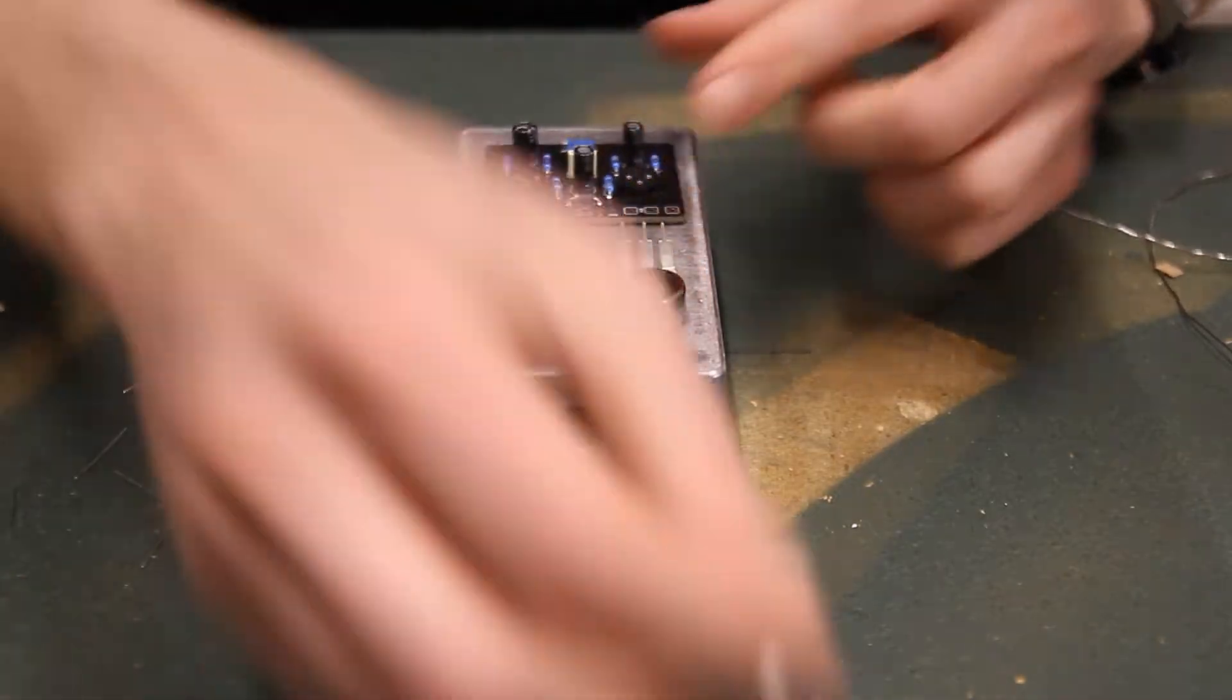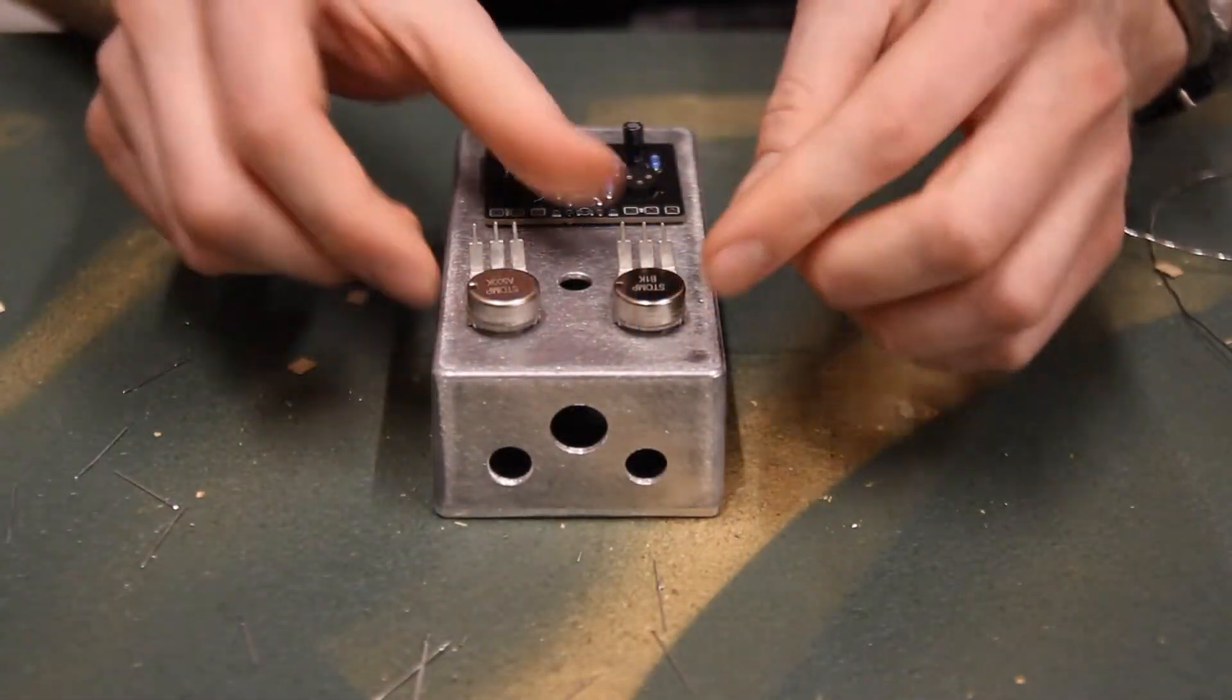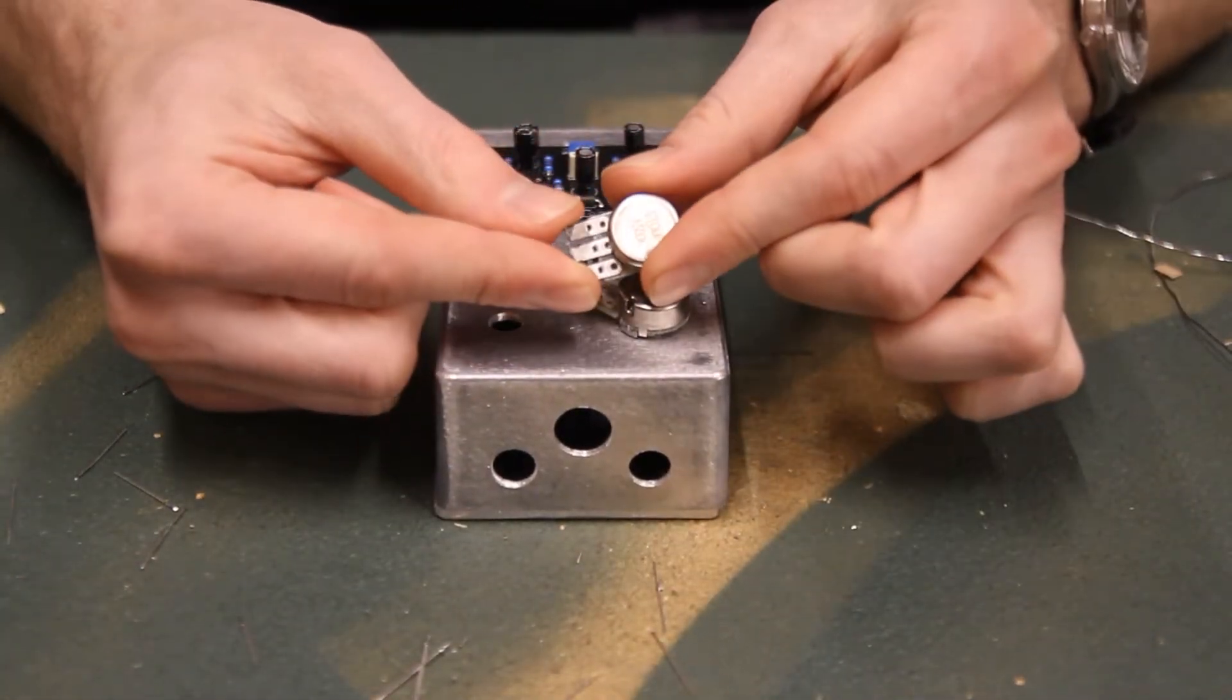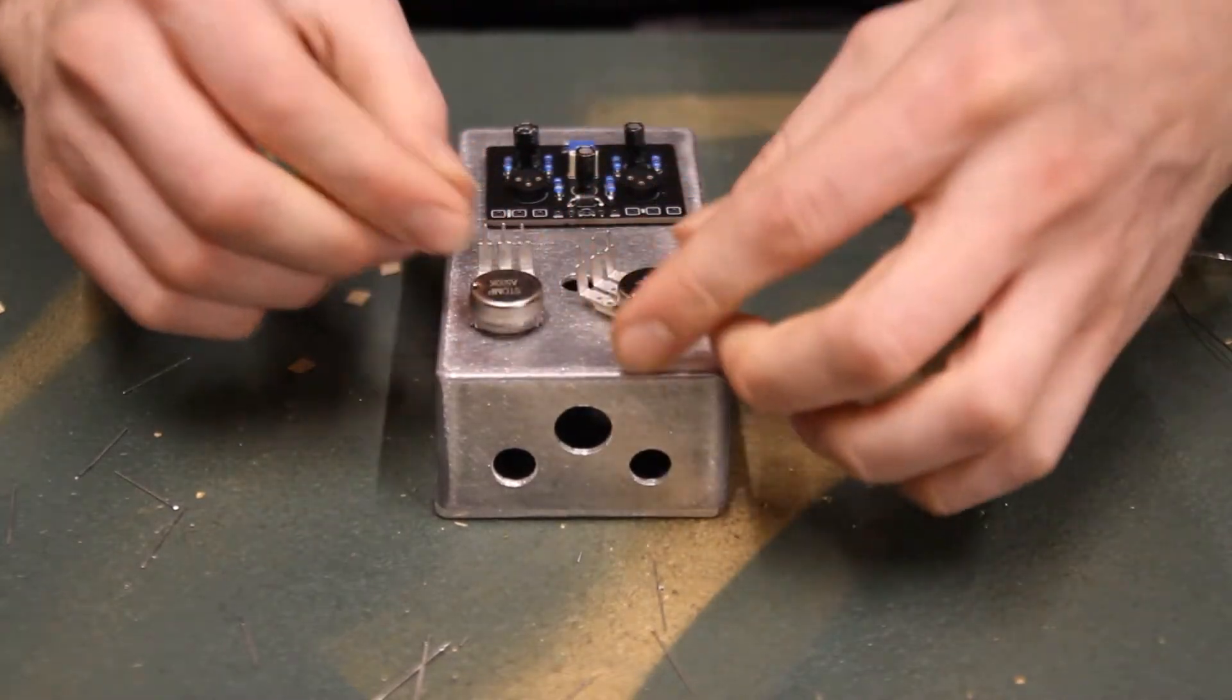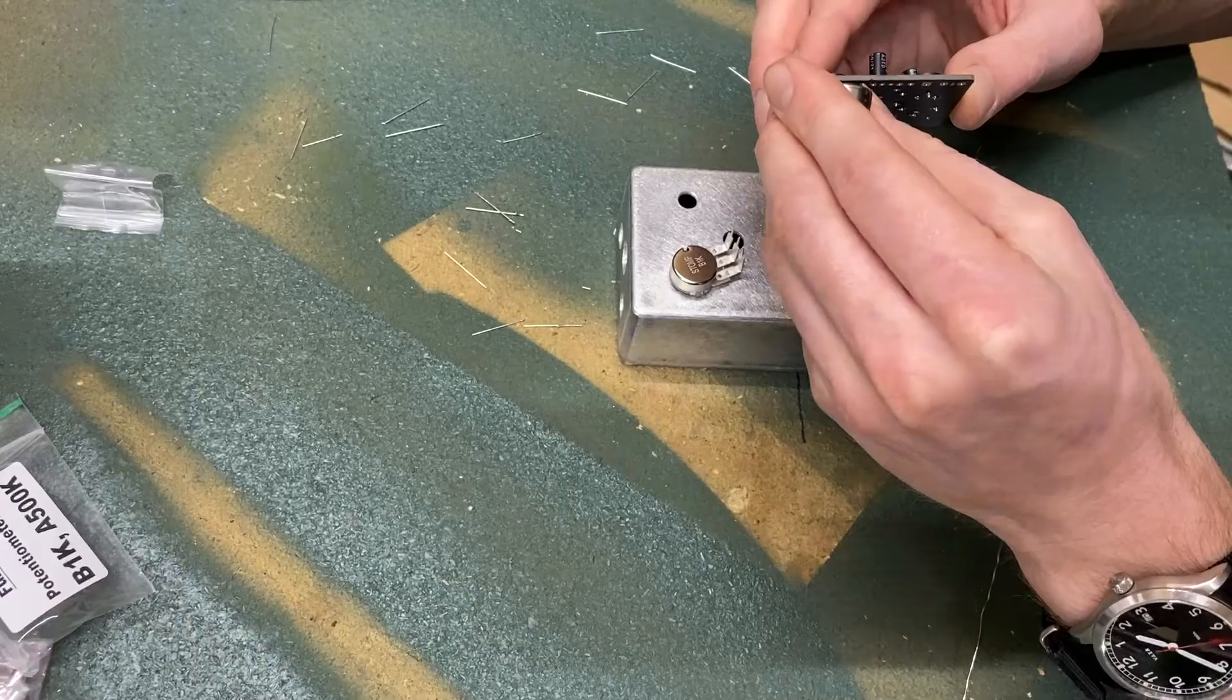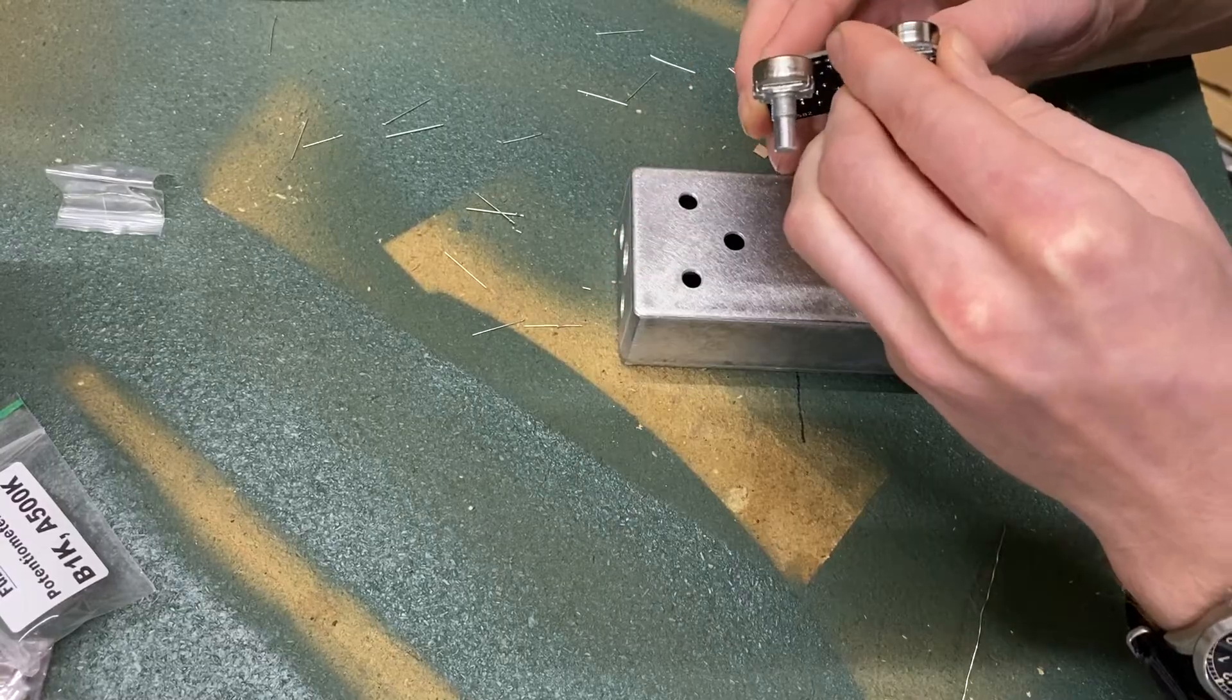Put them in the top holes of the enclosure and double check the correct values are correlated with the PCB markings. Gently bend the legs of the pots inwards a little bit so that they'll grab the PCB and insert the legs into the board.